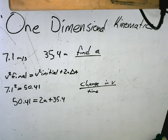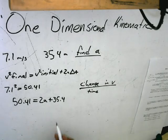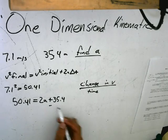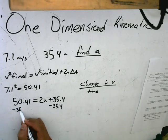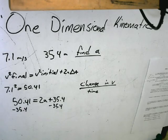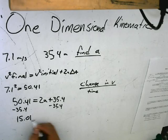In order to find this we need to subtract 35.4 from both sides. So we take 50.41 minus 35.4 to get 15.01 over 2, which equals 2a over 2. That's how we find a.